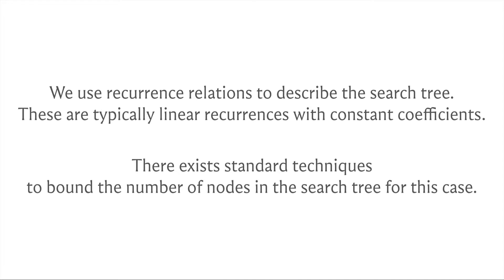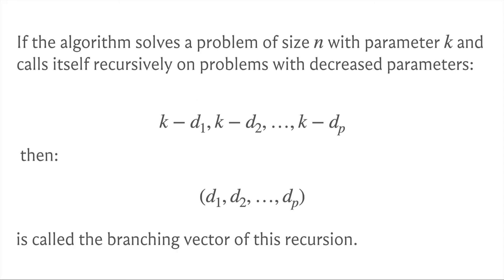So first, let's talk about a little bit of terminology. Suppose you have a branching algorithm that generates p recursive subinstances. And in these p branches, the measure that you're working with, which we will just denote by k, drops by quantities d1, d2, up to dp respectively. In this case, d1, d2, and so on, up to dp is called the branching vector of this recursive process.